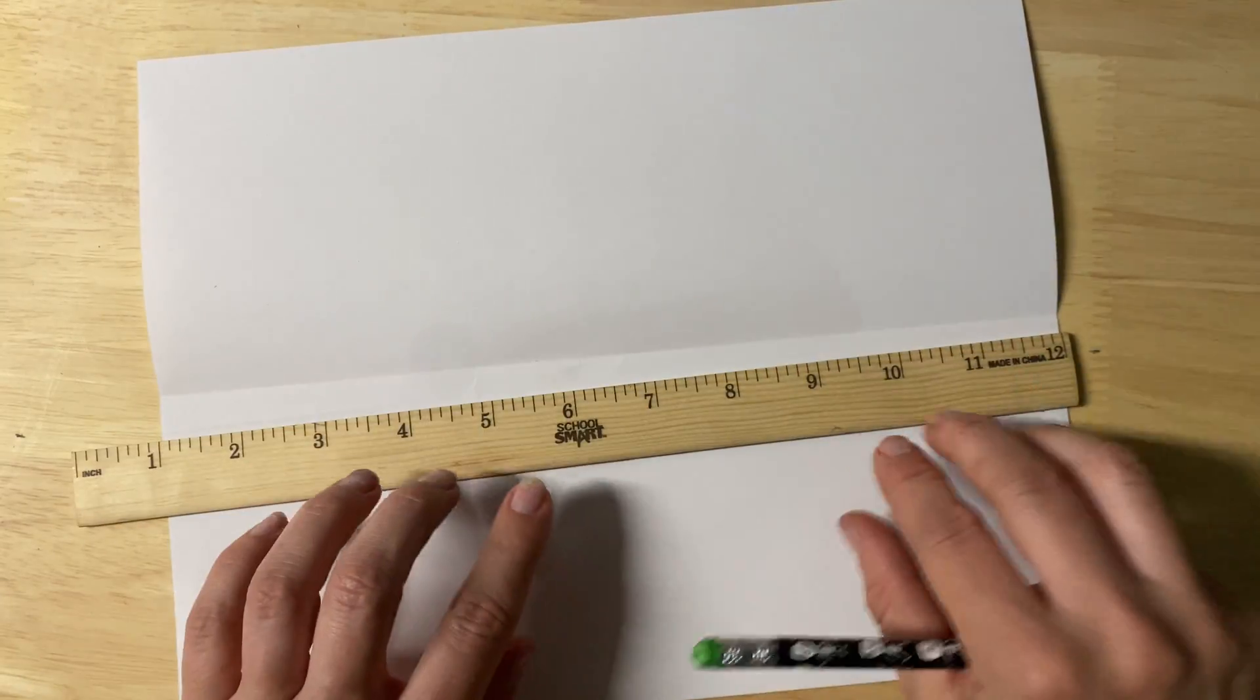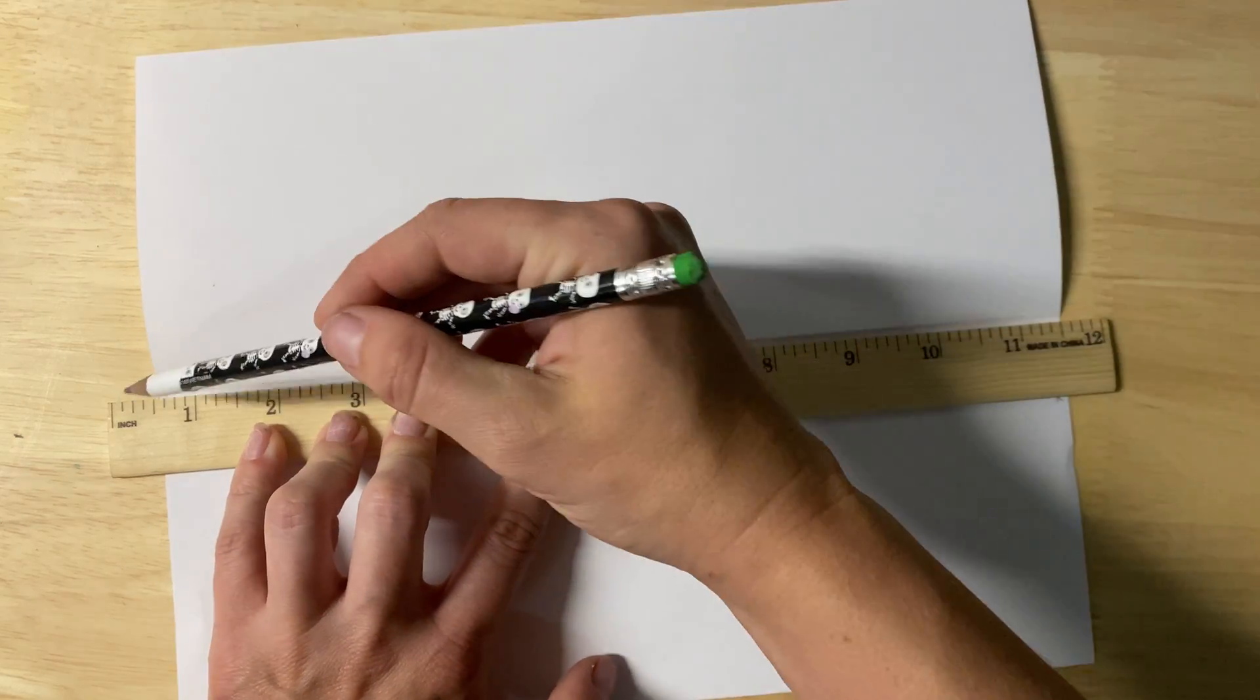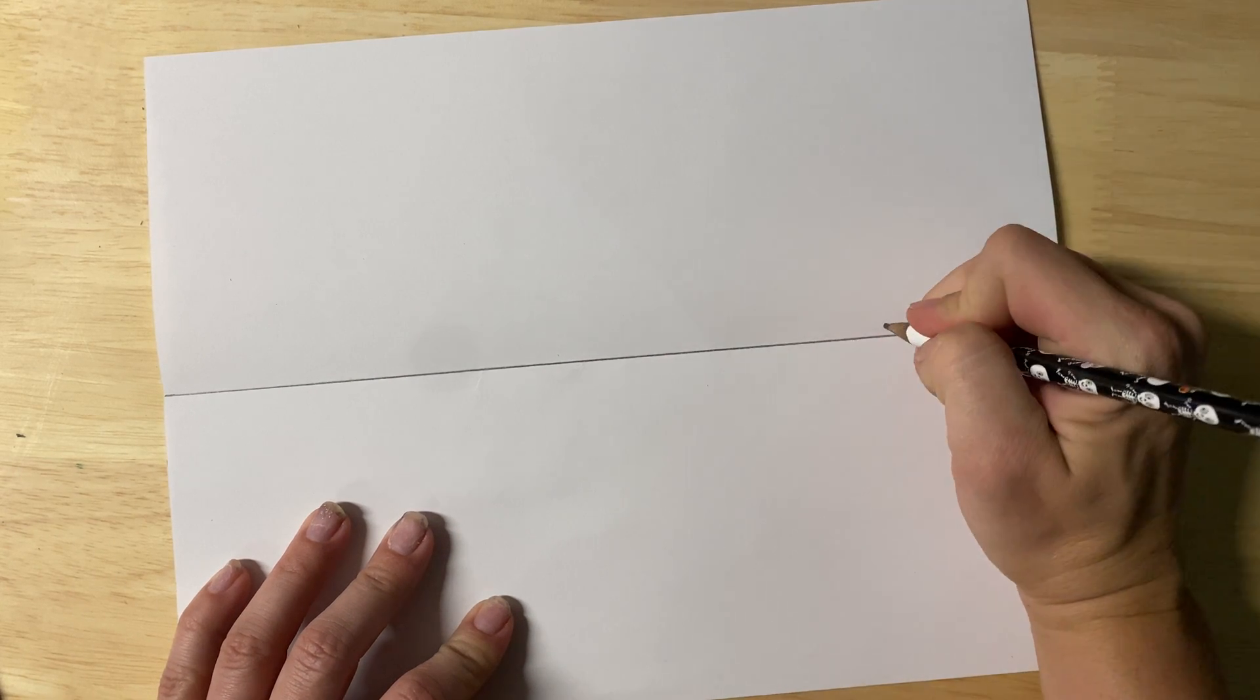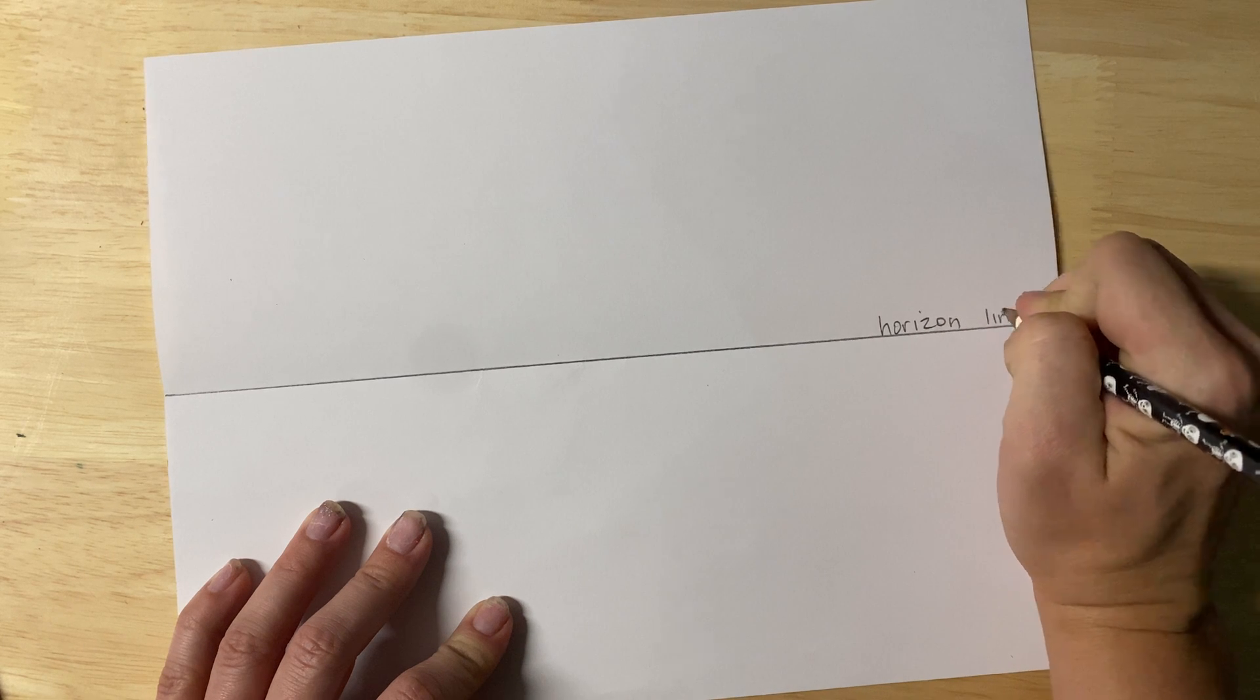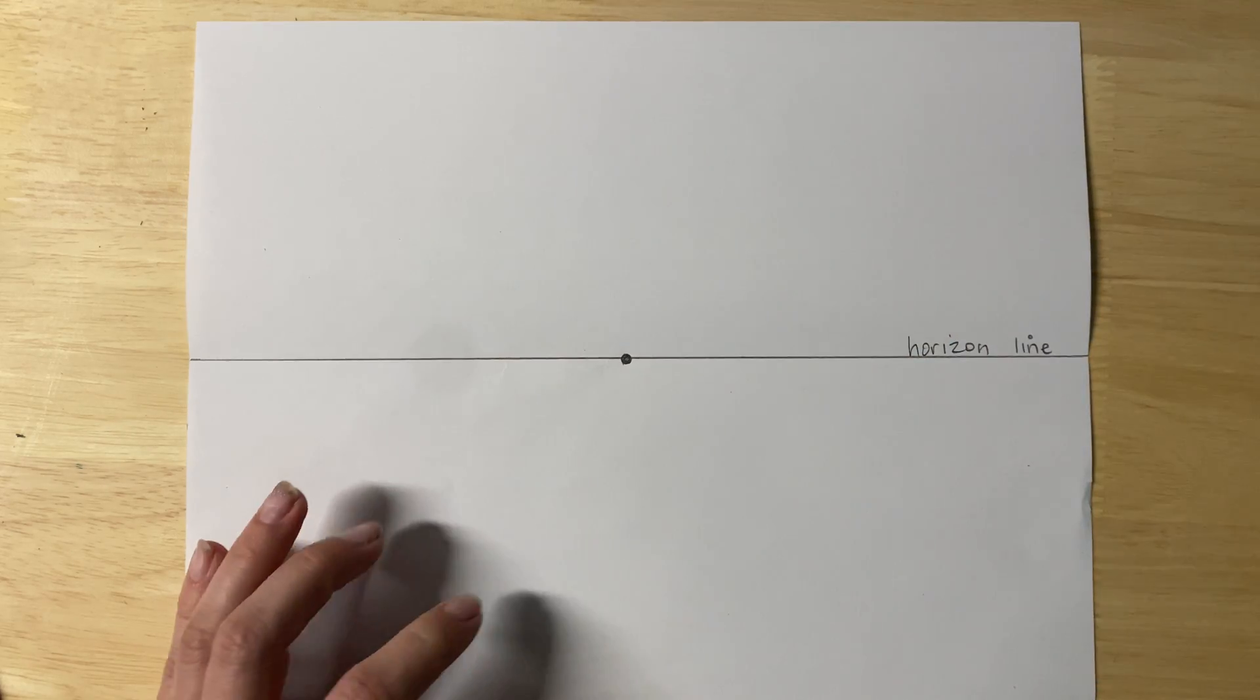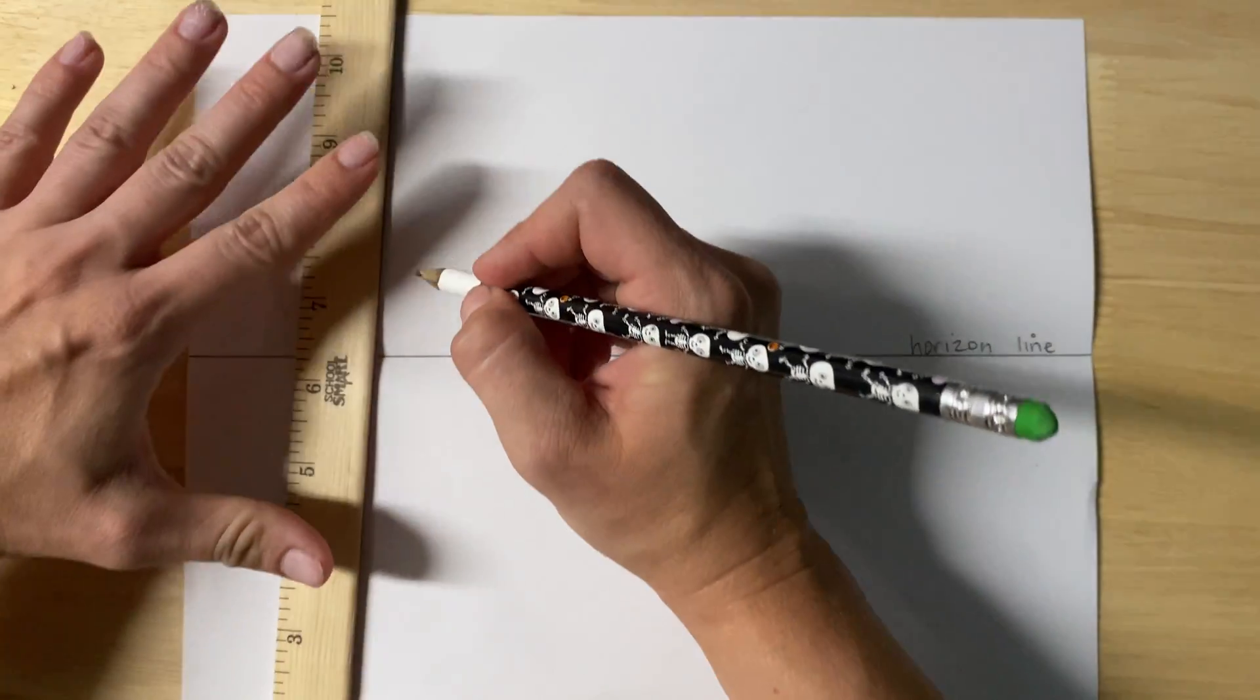Take my ruler, mark it. It's a nice looking horizon line. Okay, find a spot somewhat in the middle for your vanishing point, and now it's time to draw our shapes.